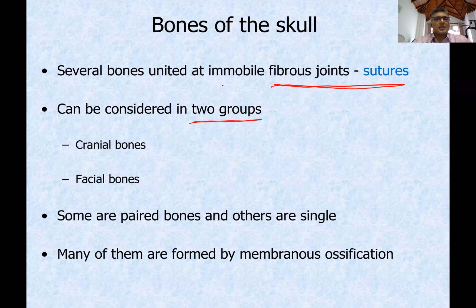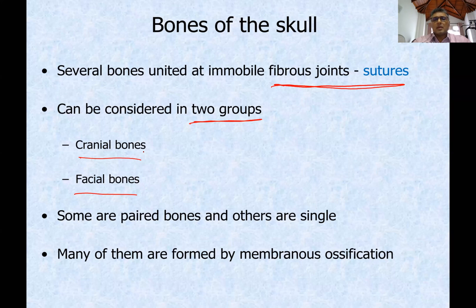Bones that form the skull can be considered in two groups: cranial bones, the bones that form the cranium, and the bones that form the face — cranial bones and facial bones. Some of these bones are paired, some others are single, and most of these bones are formed by membranous ossification. When we study the long bones of the body, they undergo endochondral ossification, but the skull bones — most of them — are formed by membranous ossification.